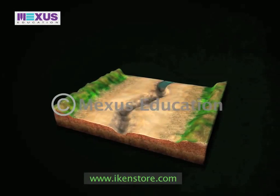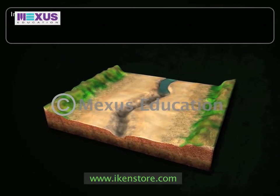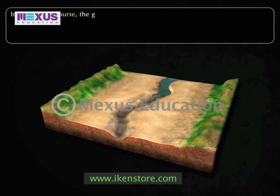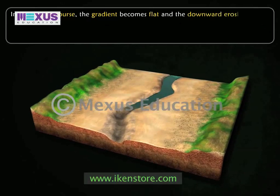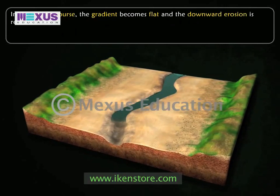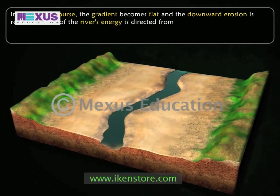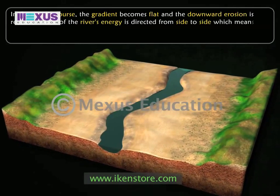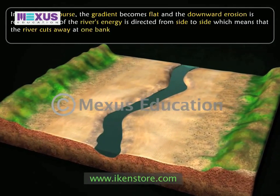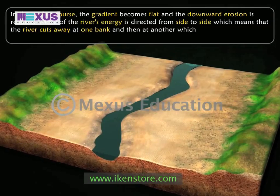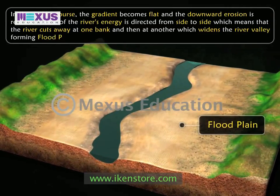The second landform is the flood plain. In the middle course, the gradient becomes flat and the downward erosion is reduced. More of the river's energy is directed from side to side, which means that the river cuts away at one bank and then at another, widening the river valley and forming flood plains.